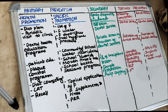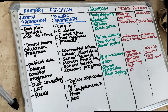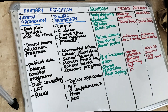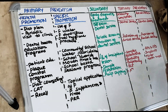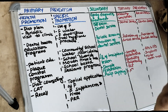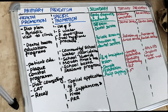Tertiary prevention is in the case of a grossly decayed tooth. The tooth is grossly decayed — either we are going to extract it and then replace it with rehabilitation. So we are going to place an implant, give an RPD, or give a fixed prosthesis. Let's talk about each one by one.